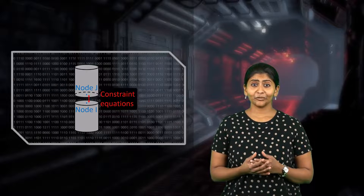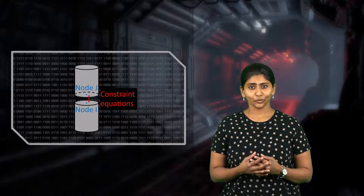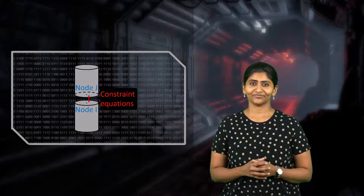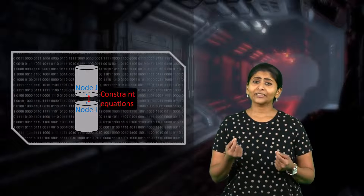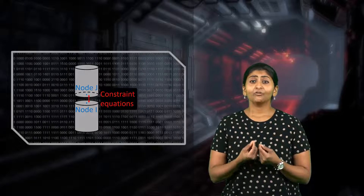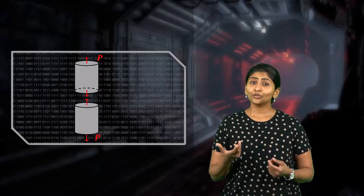Let's look at how preload is applied in a finite element simulation. Assume we have a cylinder representing the bolt. The cylinder is cut in half and two nodes are picked on each half, called nodes I and J. Physically, the two nodes are coincident. Constraint equations are created to tie together the relative motion of nodes I and J. By specifying the relative displacement between nodes I and J, or by specifying the preload force acting between them, we introduce a tensile load in the two halves of the cylinder.